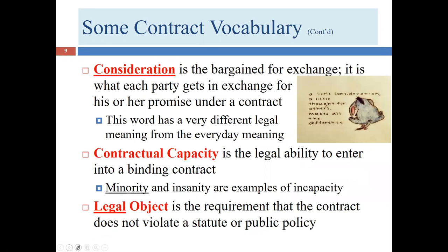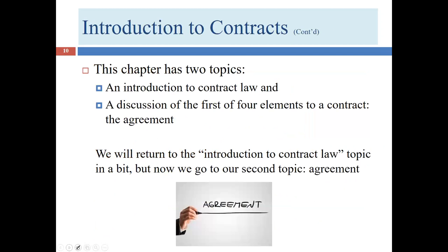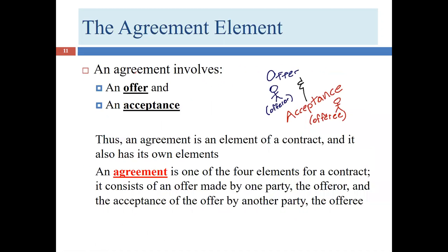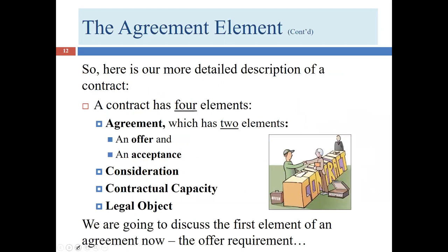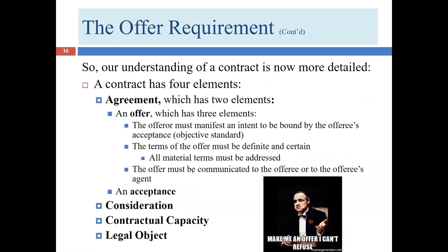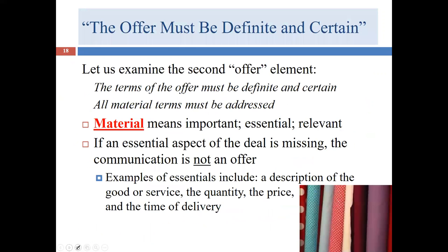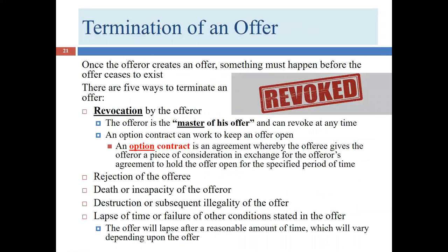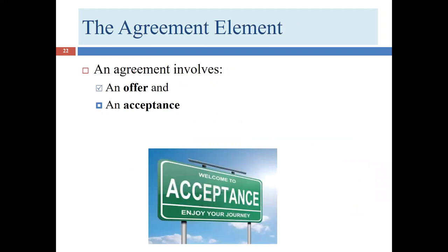We talked about what each element of contract law is. Then we discussed the first element — agreement — its definition and its two elements: offer and acceptance. We finished the discussion of offers, including the three elements of offers and how an offer can terminate. So we're about halfway through the agreement element and now we're ready for acceptance.